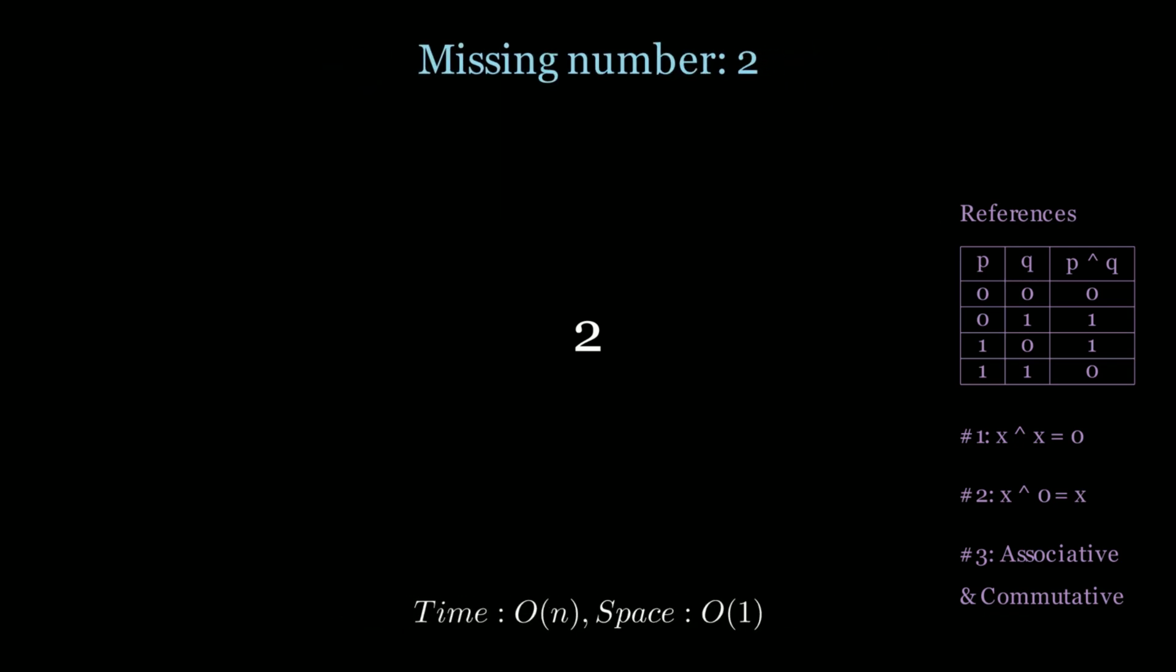Now the time complexity here is O of n and the space complexity is O of 1 constant space because we don't store any numbers. We iterate through the entire array once and we also XOR n numbers.